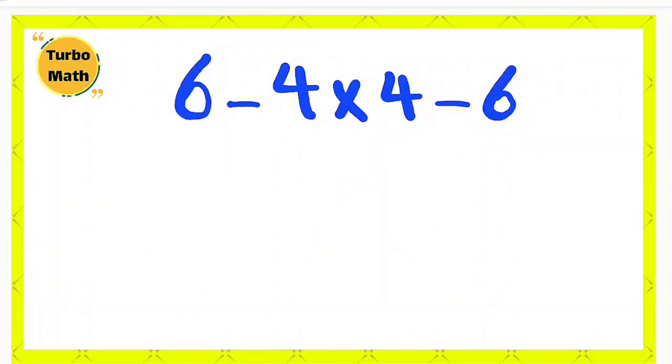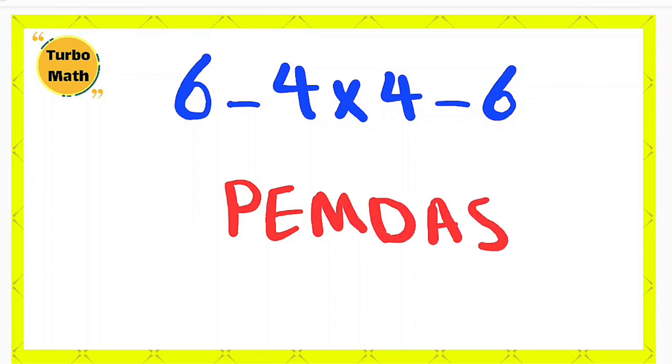Hi guys, welcome to this video and welcome to Turbo Math channel. In this question we have one multiplication and two subtractions: 6 - 4 × 4 - 6. To solve this question we need to follow a rule called PEMDAS. PEMDAS shows the priority of mathematical operations that you see in the question.